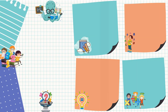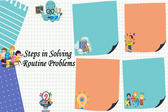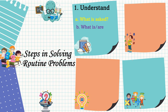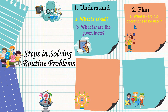These are the steps in solving routine problems. First, we should understand the problem. In understanding, read the question twice or thrice to know what is asked and what are the given facts. Second, formulate a plan. In planning, consider the following: know what operation or operations are to be used and what is the number sentence.